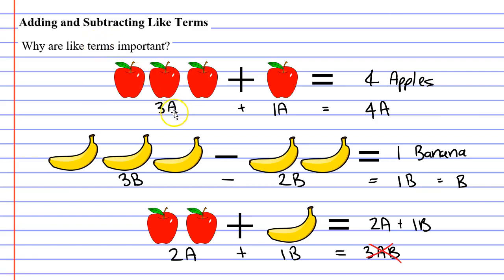Well, what we notice is that when the pronumerals are the same, so when we had 3a and 1a, we could combine them together. We could say 3a plus 1a is 4a. The same for the bananas. The pronumerals were the same. They were b, and we were able to combine these together. 3b's minus 2b's gave us 1b.